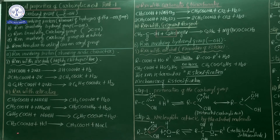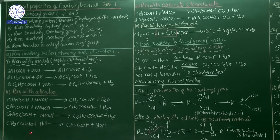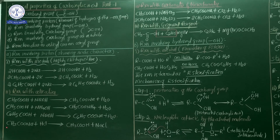An important key point: carboxylic acid can be regenerated by treating its salt with diluted mineral acid. Whenever a salt is treated with mineral acid, the acid is obtained again. For example: CH₃COONa + HCl → CH₃COOH + NaCl. So the acid comes back. Whenever metals react with carboxylic acid, hydrogen is liberated; when alkalis react, salt and water are liberated.